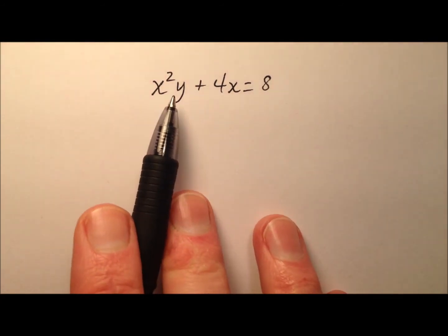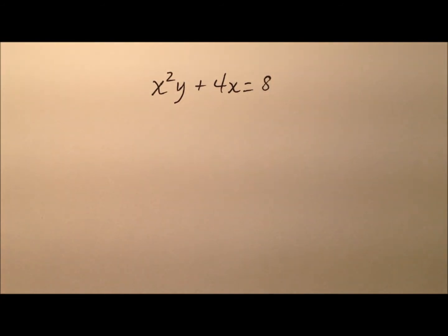In this example we have x squared y plus 4x equals 8, and we're going to use implicit differentiation twice to find the second derivative of this equation. Then we'll try a back substitution from the first derivative so we can clean up the second derivative and write it totally in terms of x and y.